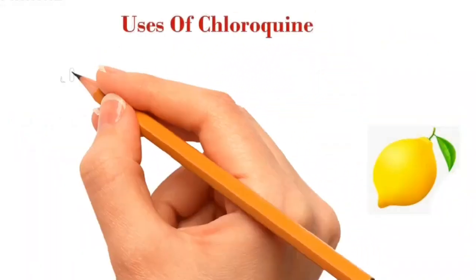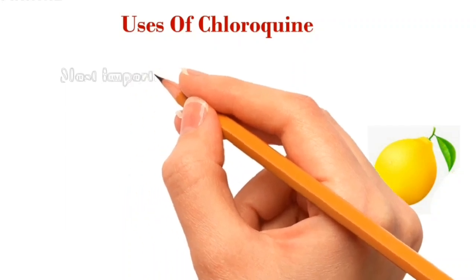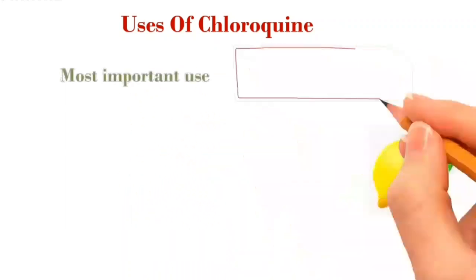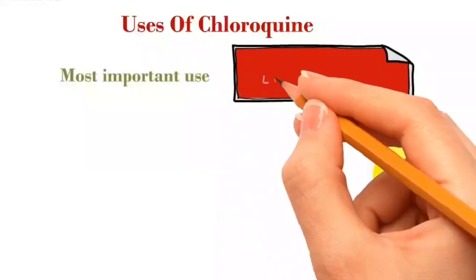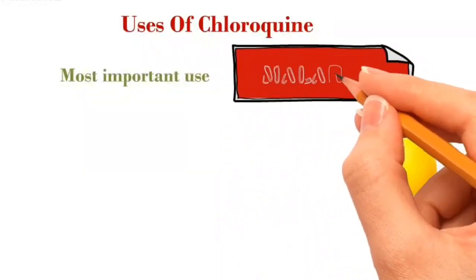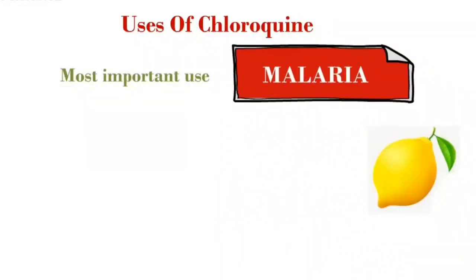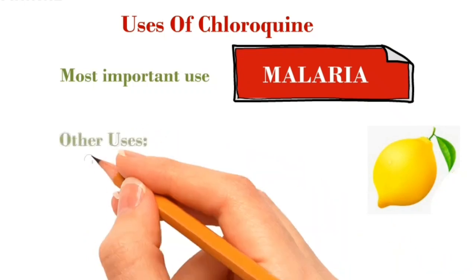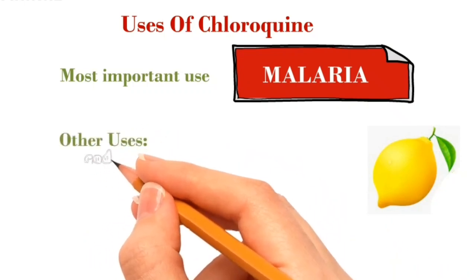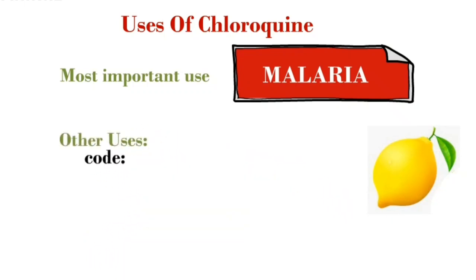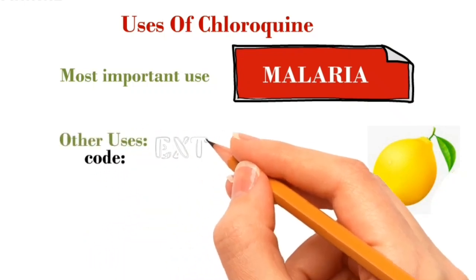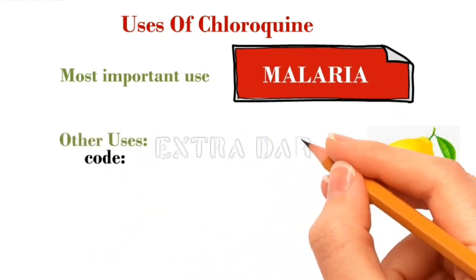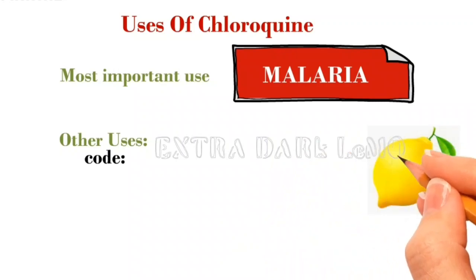Uses of chloroquine. The most important use of chloroquine is in the treatment of malaria. For studying the other uses, we shall use the code EXTRADARKLEMON.